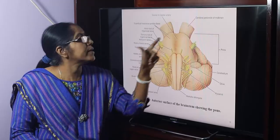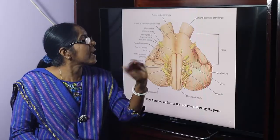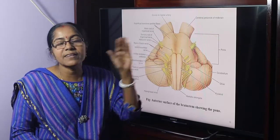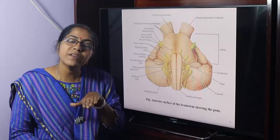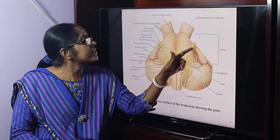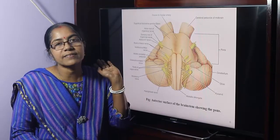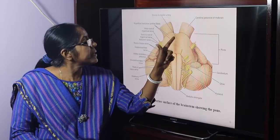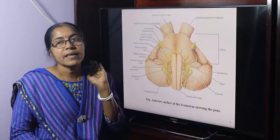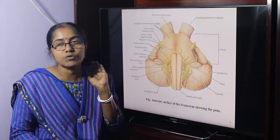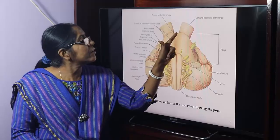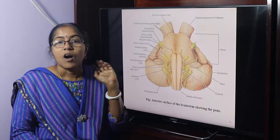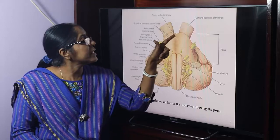The pons has two borders: superior and inferior border. It has two surfaces: ventral surface and dorsal surface. The ventral surface is convex in all directions. In the median plane, it presents a groove called the basilar groove.